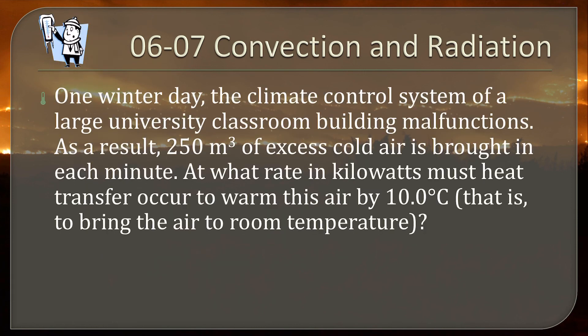One winter day, the climate control system of a large classroom malfunctions. As a result, 250 meters cubed of excess cold air is brought in each minute. At what rate in kilowatts must heat transfer occur to warm this air by 10 degrees Celsius? That is to bring the air to room temperature. So this is convection again because we're bringing in this cold air and then we want to warm it up.